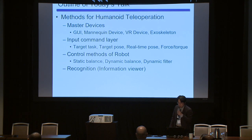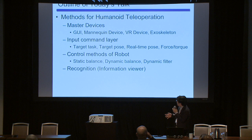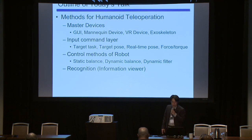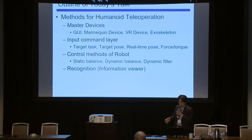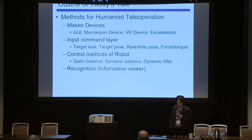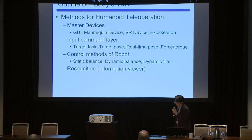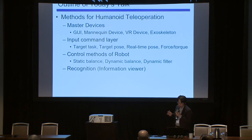The control method on the robot side is also different. In static balance, the robot has static balance, dynamic balance, and a dynamic filter to compensate human commands. We also have to combine this robot motion with recognition and pass information from the robot back to the operator.